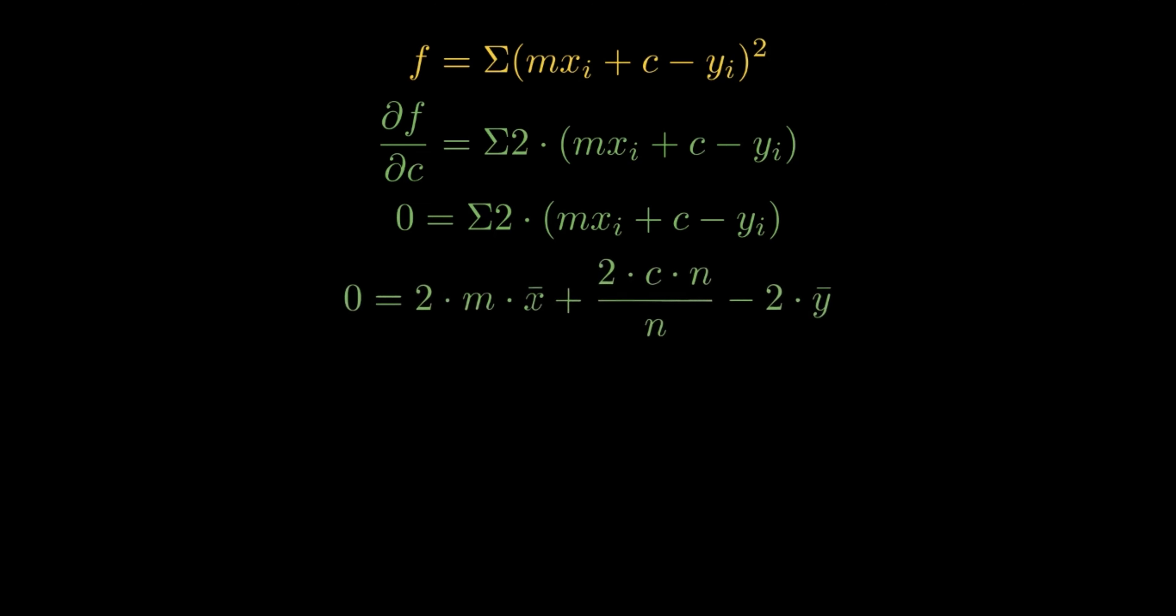What would be an interesting observation in this case is the fact that we get y bar equals mx bar plus c_mean, which basically means that the optimum line that we are talking about should compulsorily pass through the point which is formed by the means of data's coordinates. Interesting, isn't it?